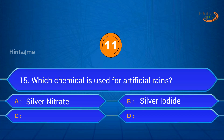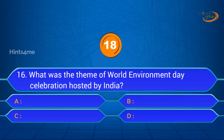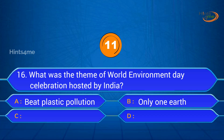Question 15: Which chemical is used for artificial rains? A. Silver nitrate, B. Silver iodide, C. Sodium polyacrylate, D. Sodium nitrate. Answer: Silver iodide.